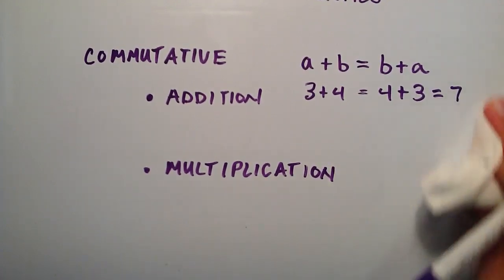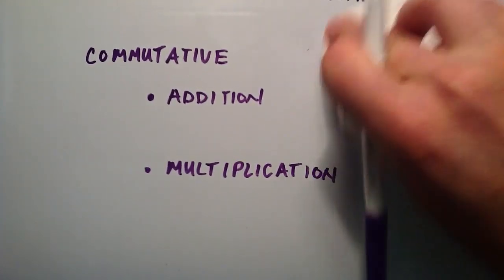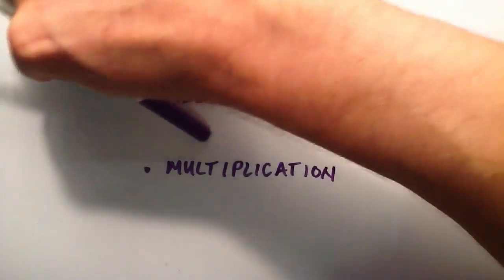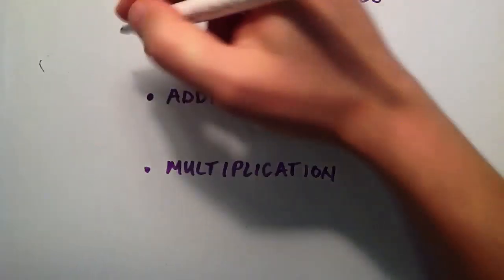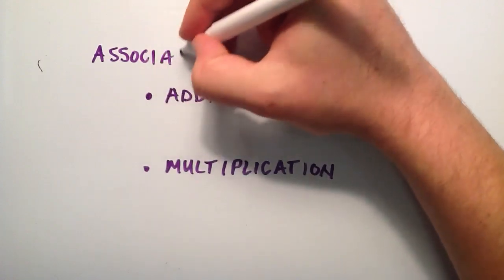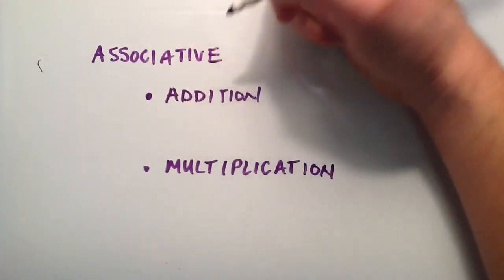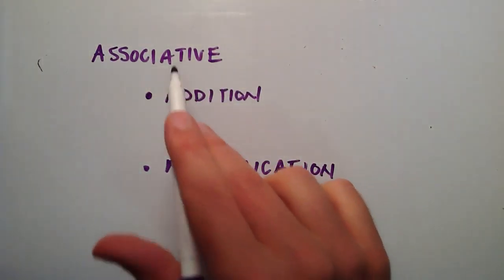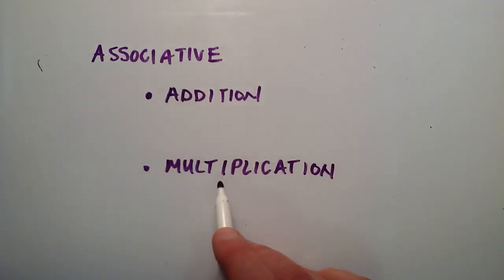Next we're going to move to the associative property. Let's write down the associative property here. That also has two different types: the associative property of addition and the associative property of multiplication.